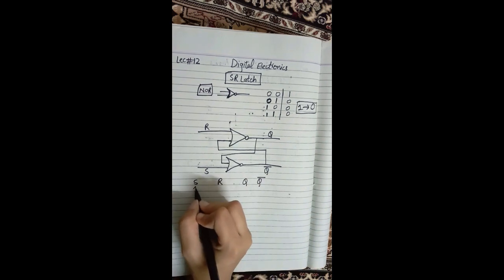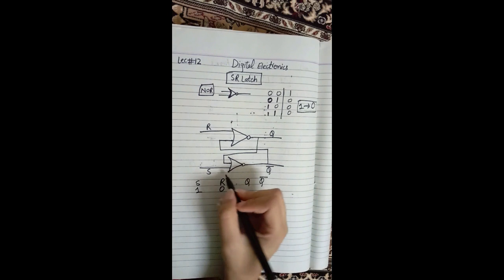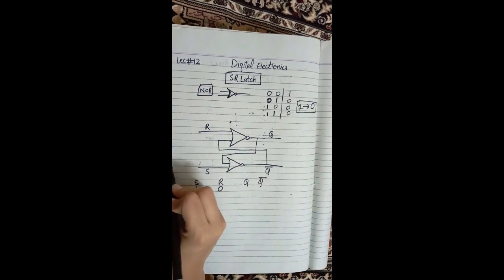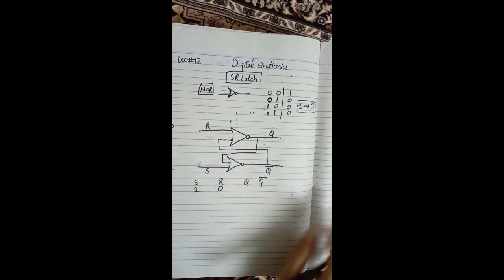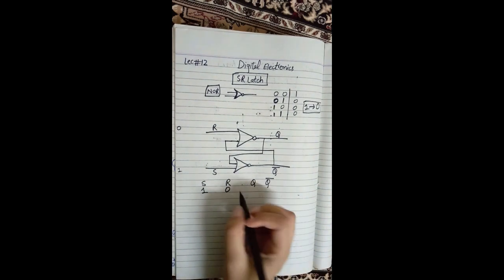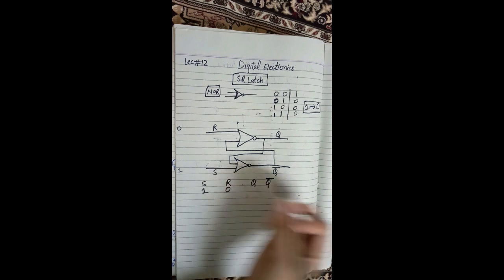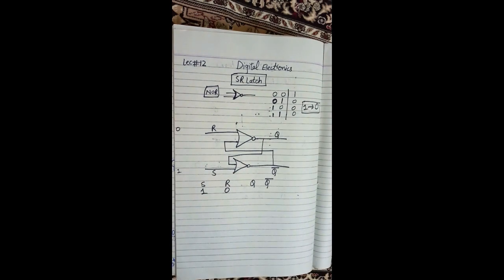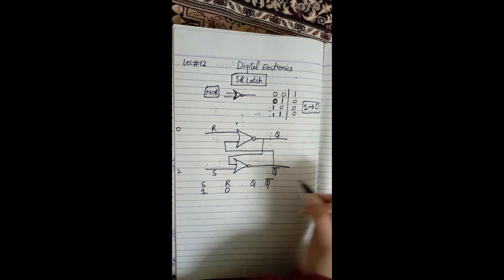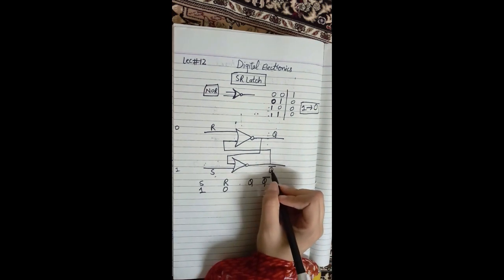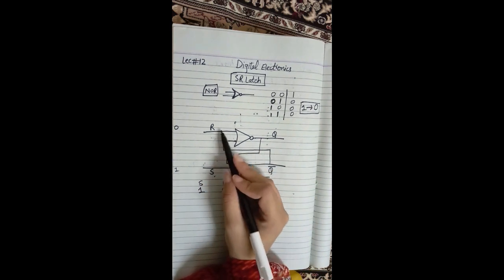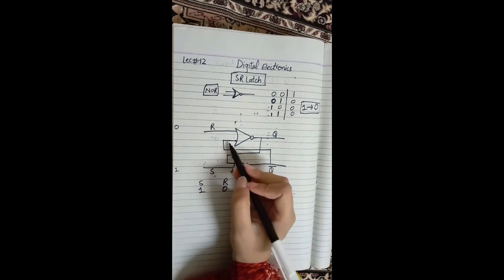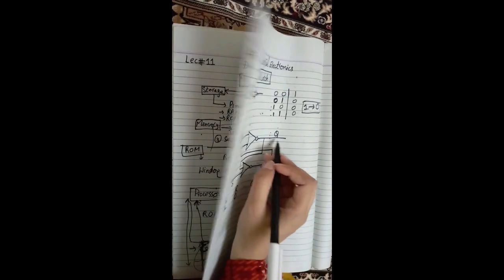When S=1 and R=0: since S has a 1 input, the output of the S NOR gate will be 0, so Q̄=0. Now for the R gate, R=0 and Q̄=0, so both inputs are 0 — the output will be 1, meaning Q=1. This is the Set state.